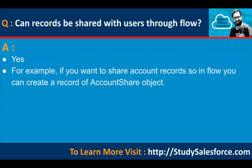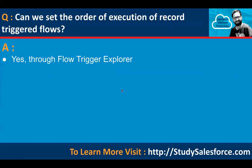Can records be shared with users through flow? Yes. For example, if you want to share account records, in flow you can create a record of the account share object. You fill the required fields available under this object and your record will be shared. Can we set the order of execution of record triggered flows? Yes — a new feature known as flow trigger explorer is available, and with it you can set the order of execution.